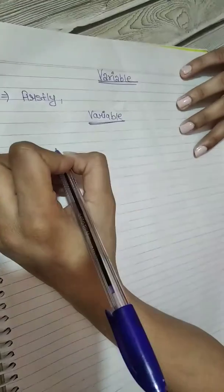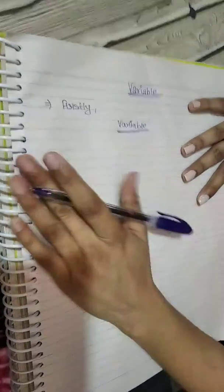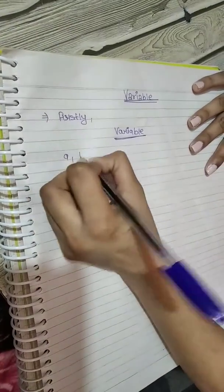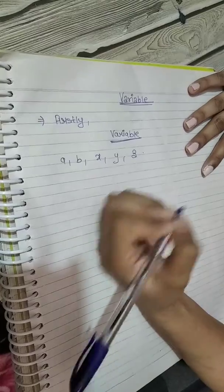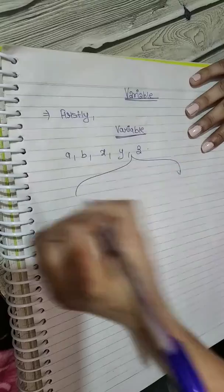So all the letters in alphabets, when used in mathematics, are known as variables - whether it is a, b, x, y, z, okay, you can pick any of them. Now, so what I have done is I have found the two families of a variable: that is family one and family two.